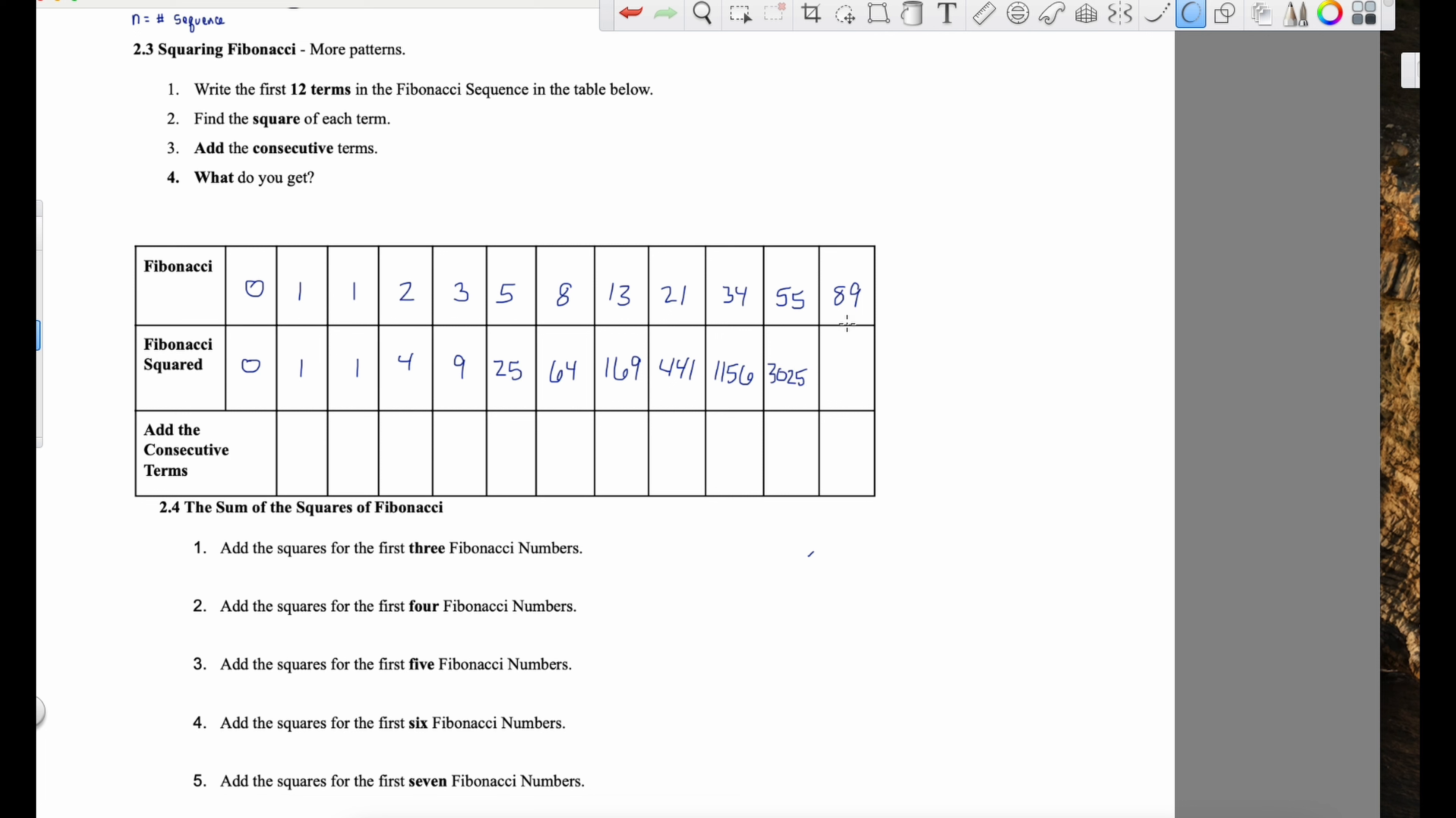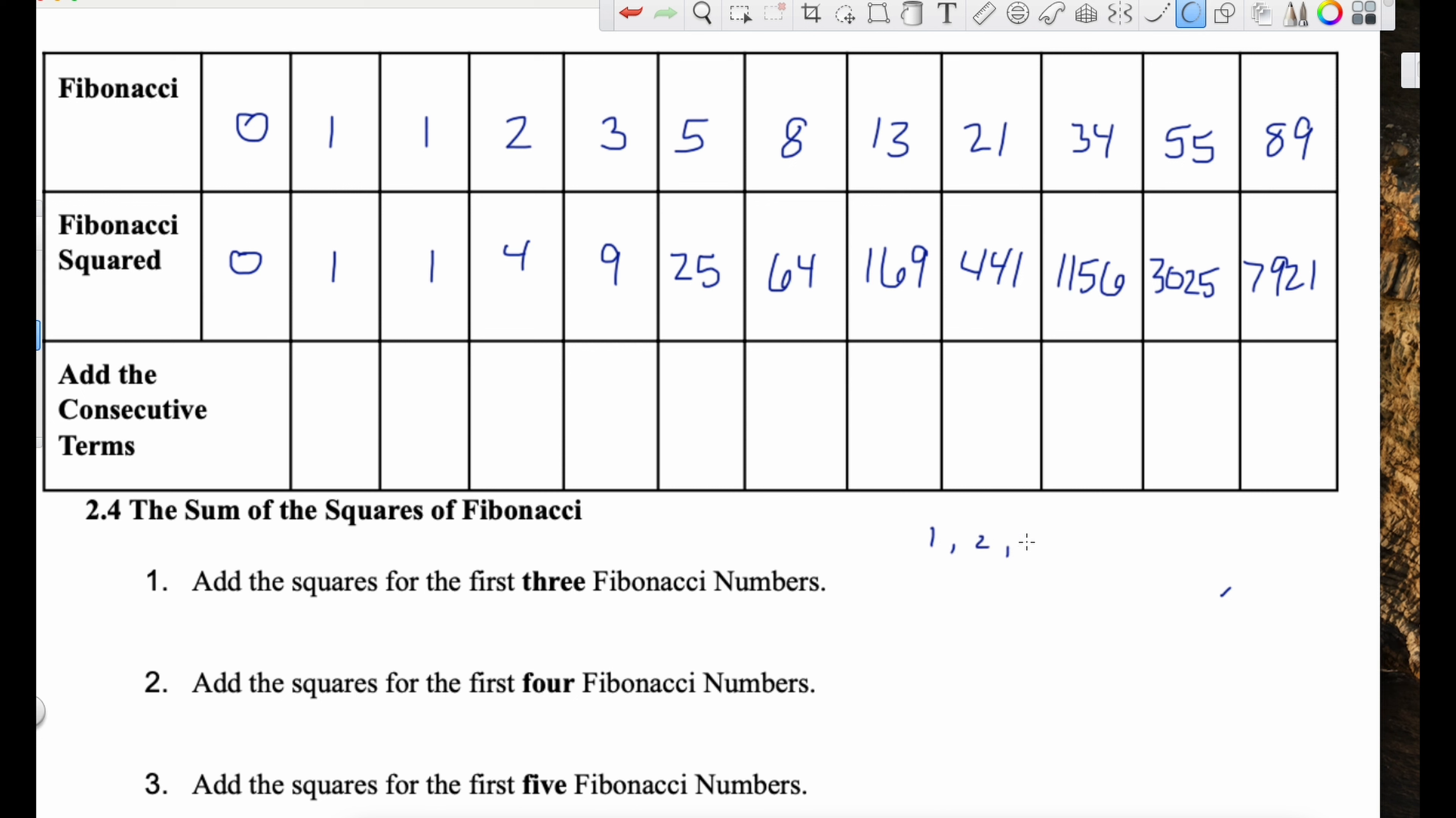And so there's some more interesting patterns with the golden ratio and Fibonacci that we're not masking you guys to look at tonight. So let's take a look at this first one together. 2.3 squaring Fibonacci. Write the first 12 terms of the Fibonacci sequence in the table below.